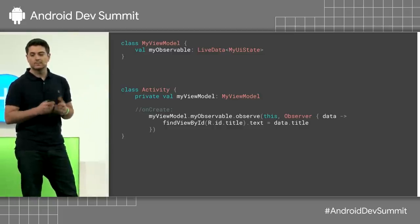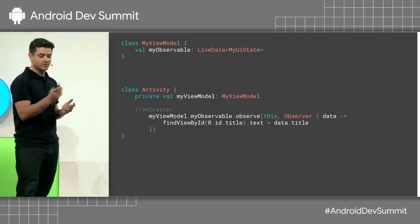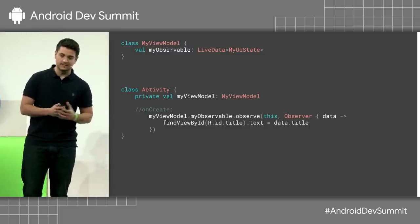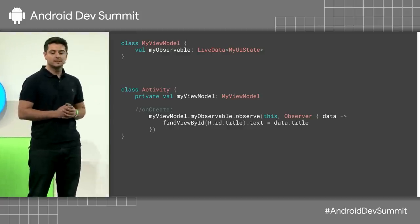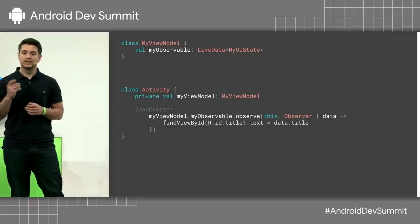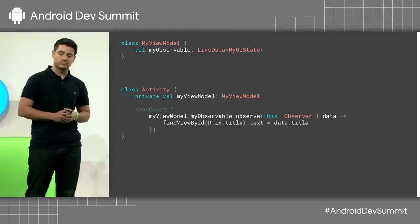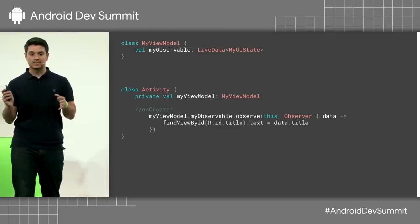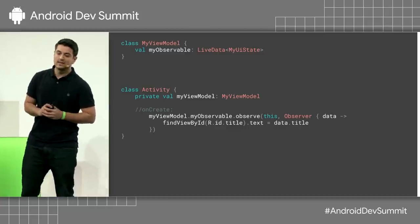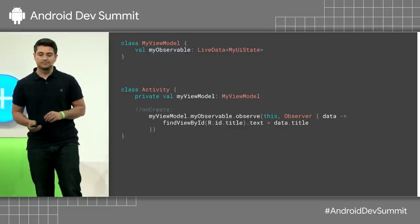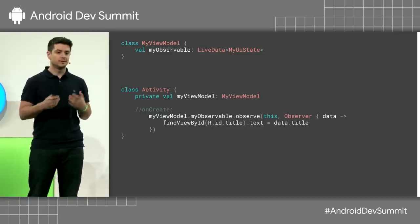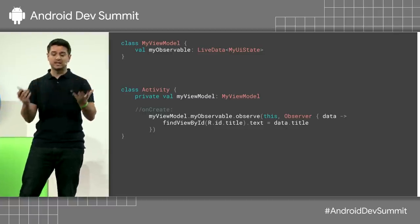Let's see how this looks with a little bit of code. In the ViewModel, we expose our LiveData. You're going to see a lot of examples of how to expose LiveData from a ViewModel. Then in our activity, we make the actual subscription by calling the observe method on the observable. The first parameter is something called a lifecycle owner, and the second parameter is an observer — this is what's called whenever the LiveData's value is changed.